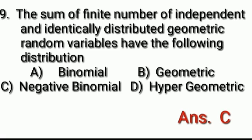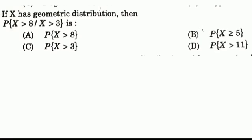Question number 10: If x has a geometric distribution, then P(x > 8 | x > 3) — using the lack of memory property of the geometric distribution. Answer: Option B, P(x ≥ 5).